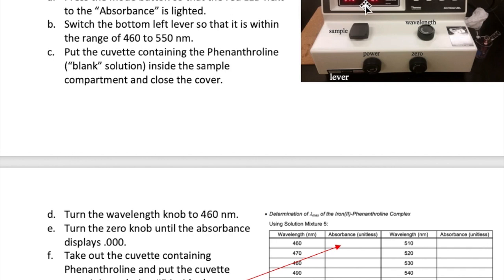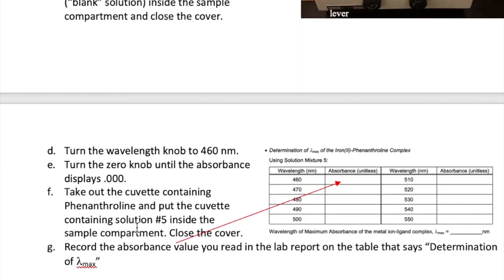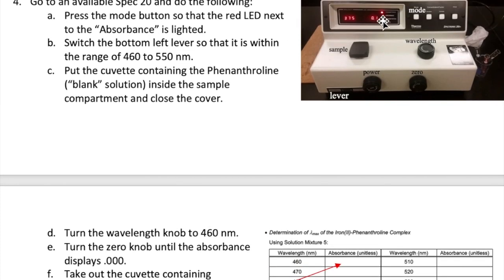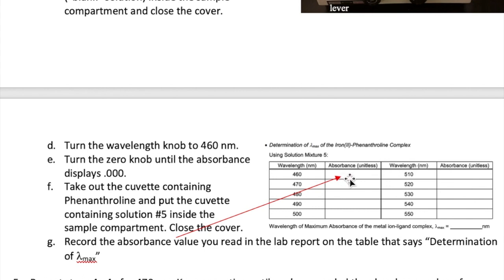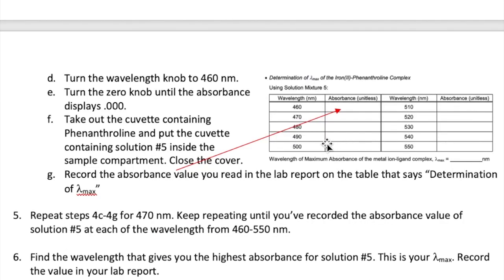Once the absorbance reads 0.000, take out the cuvette containing the blank and place the cuvette containing solution number 5 inside the sample compartment and close the cover. Read the value of the absorbance and record that in your lab report at the space indicated right here. You're now going to repeat steps 4C to 4G but at wavelength 470 nanometers. For every wavelength, you must blank the spec before measuring the absorbance of solution number 5. Repeat these steps again until you have scanned all the way to 550 nanometers. Look through all the absorbance values and find the highest value, then write the wavelength that gives you the highest value of absorbance here. That's your lambda max.